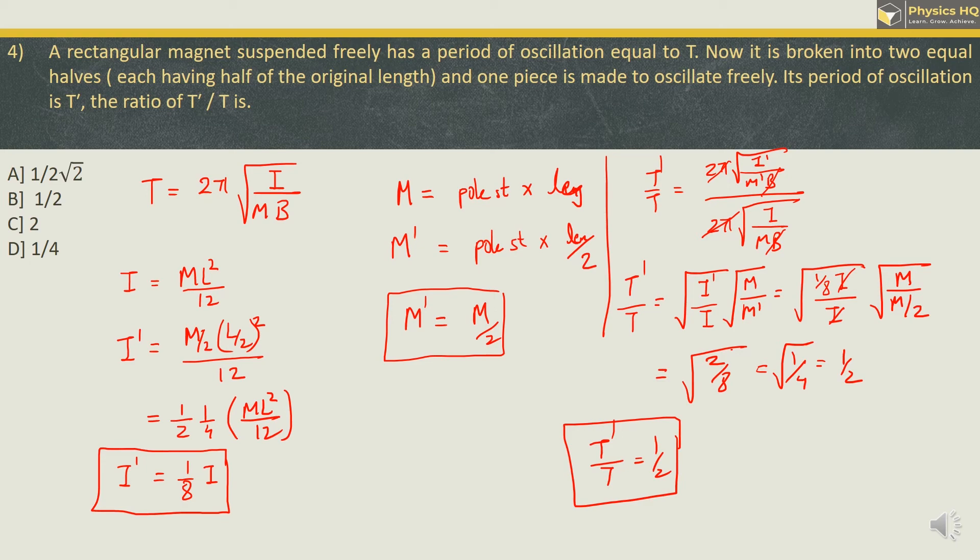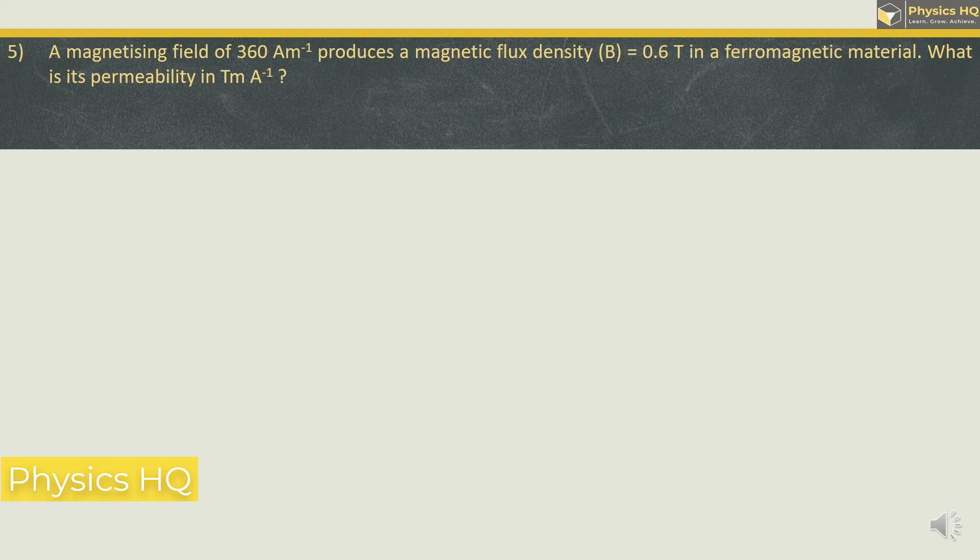Let us check out the next MCQ. A magnetizing field of 360 ampere meter produces a magnetic flux density of 0.6 tesla in a ferromagnetic material. What is its permeability in tesla meter per ampere? These are the options. The formula that we have is B is equal to mu H.